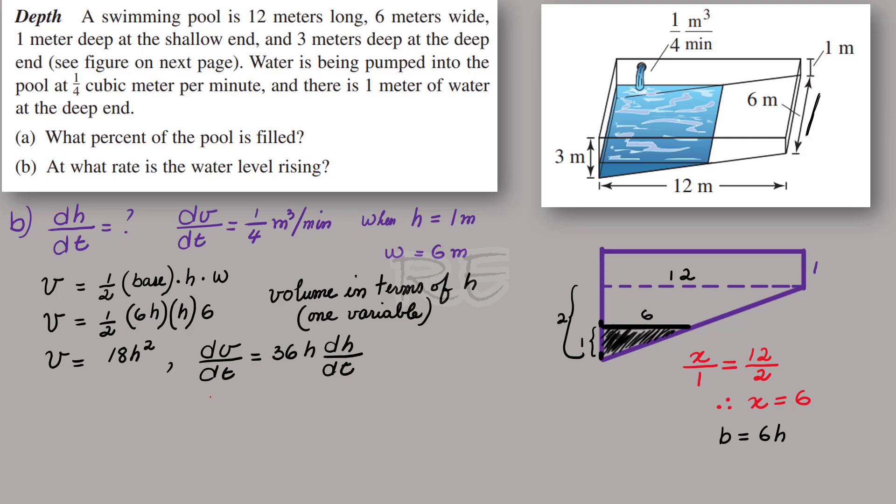Assuming that they are looking just for the linear change of the height, dv/dt is one-fourth cubic meter per minute. It'll be multiplied by 36, and when h equals 1, it's 36 times 1, dh/dt.